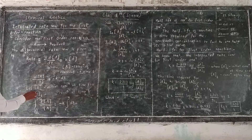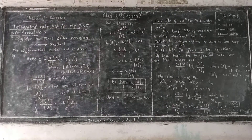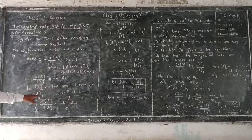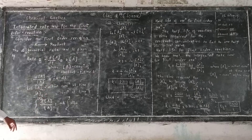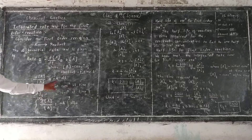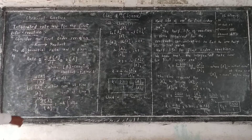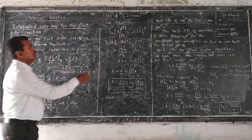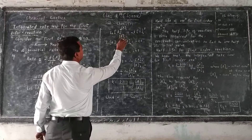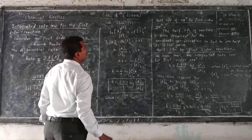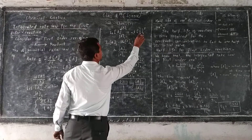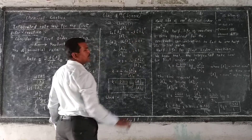Here A₀ is the initial concentration at time t equals zero, and after time t it becomes Aₜ — the concentration after time t. Now integrating this equation by taking limits of concentration from A₀ to Aₜ, and limits of time from zero to t. Initial time is zero and final time is t.